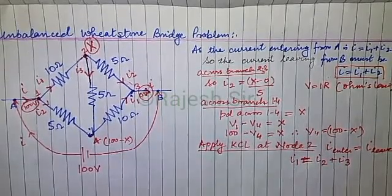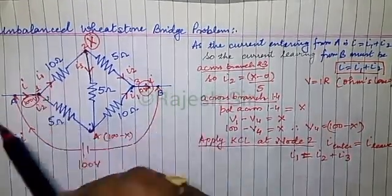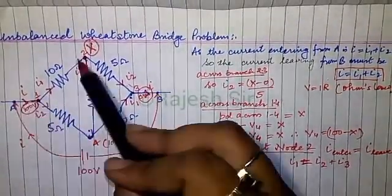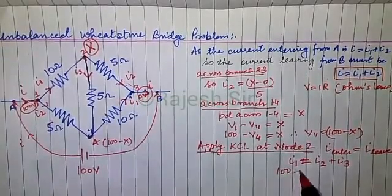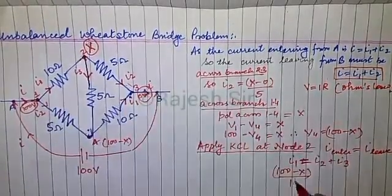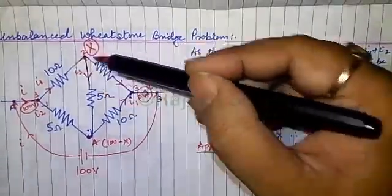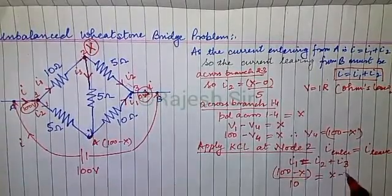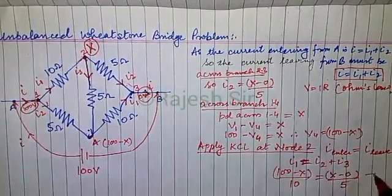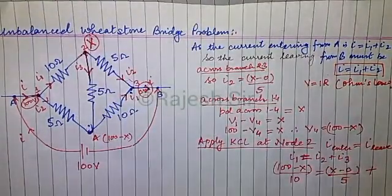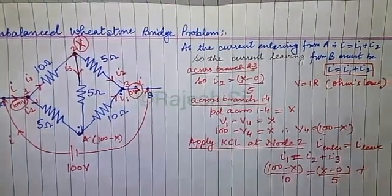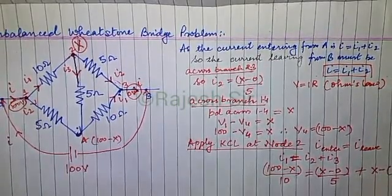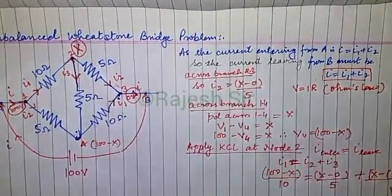At node 2: i1 = (100 − x) / 10, i2 = (x − 0) / 5, and i3 = (x − (100 − x)) / 5. So the KCL equation is: (100 − x) / 10 = (x / 5) + ((2x − 100) / 5).